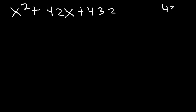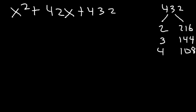Try this one: x squared plus 42x plus 432. So 432 is divisible by 2. 432 divided by 2 is 216. So that's not going to add to 42. 432 is also divisible by 3, and you're going to get 144. If you divide it by 4, you're going to get 108. So what I would do is start with 1 or 2 and just keep increasing it.